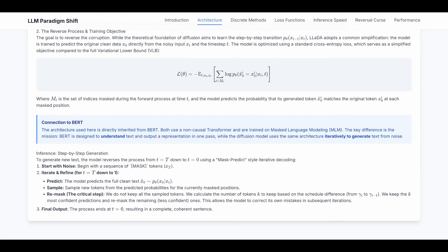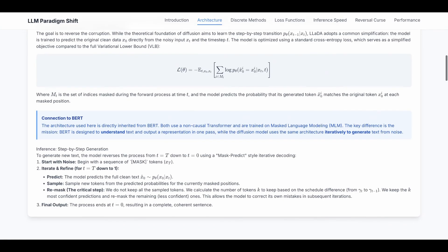We calculate the number of tokens k according to the schedule. We keep the k most confident predictions and we mask the remaining ones. This means although we are predicting the whole full clean text at each step, we are only using part of it every time. This allows the model to correct its own mistakes in subsequent iterations. And when we finally reach t equals to zero, all the mask tokens should be transformed to actual words.